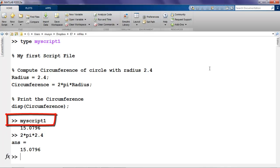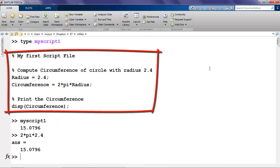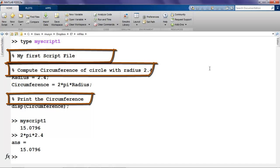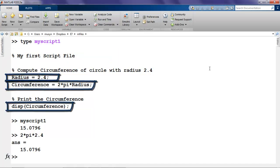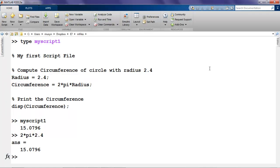So by typing the name of the script file, we executed all the lines of code in that script file. Three of the lines were comment lines, which means nothing is executed. And three of the lines were functional, two assignments followed by a disp.